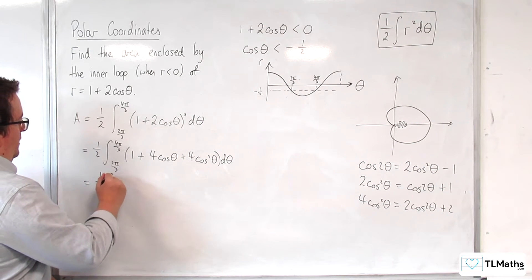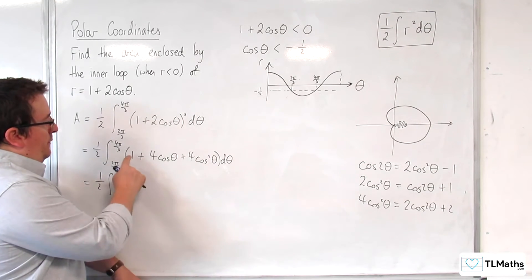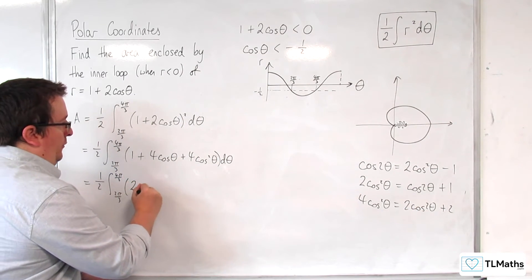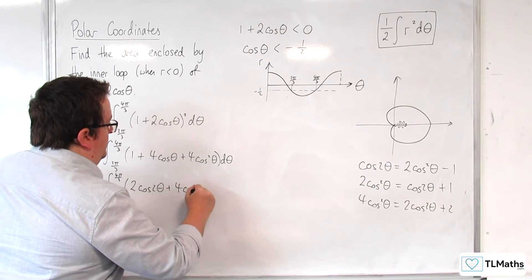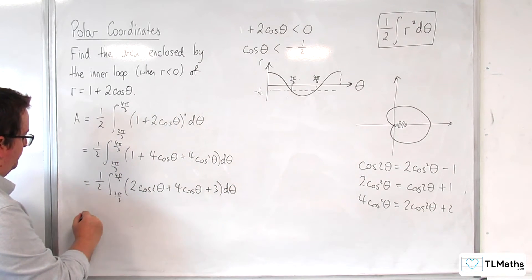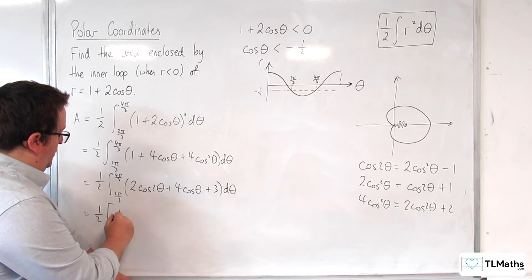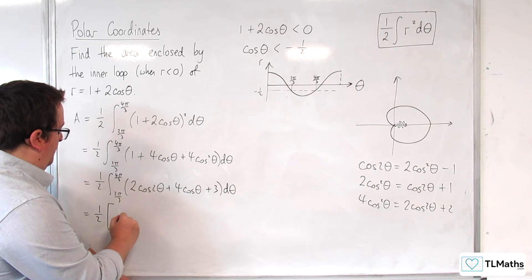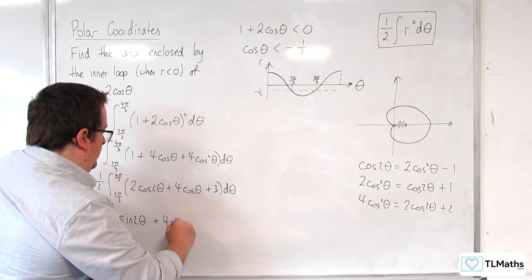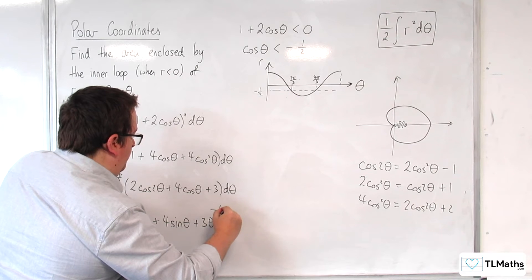So we've got one half times the integral between 2π/3 and 4π/3 of 2 cosine 2θ plus 4 cosine theta plus 3, dθ. Integrating: 2 cosine 2θ integrates to sine 2θ, then 4 sine θ, plus 3θ, evaluated between 2π/3 and 4π/3.